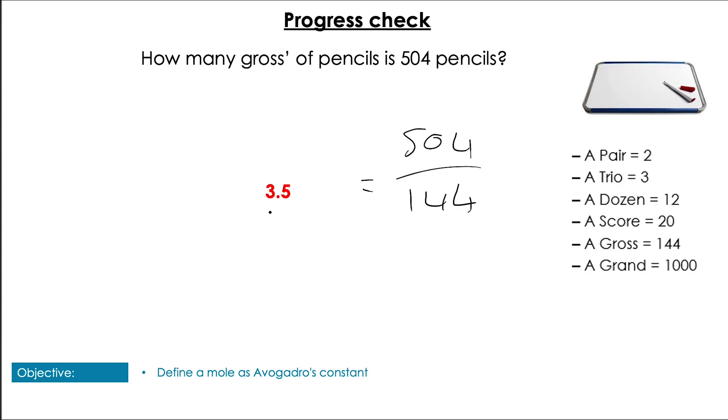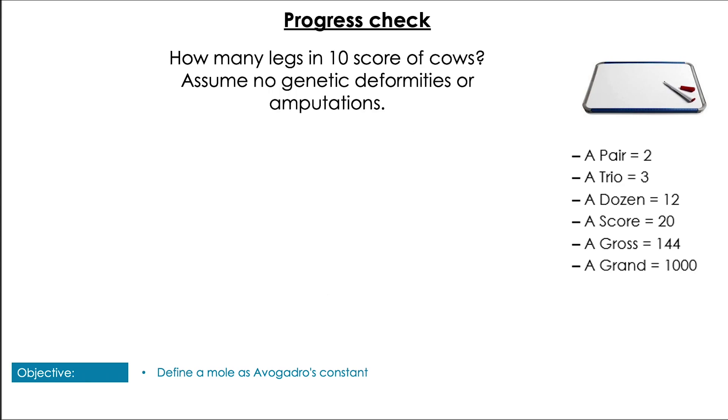So you're getting the hang of this. Let's just do a couple more. So we've ramped up the difficulty. I want you to tell me how many legs there are in ten scores of cows, assuming no genetic deformations or abnormalities. No three-legged cows. Pause the video. Give yourself a moment for it. Pop them up! So hopefully here you got the ten score and there's twenty in a score. So you did ten times twenty which equals two hundred and of course cows have four legs. So eight hundred.